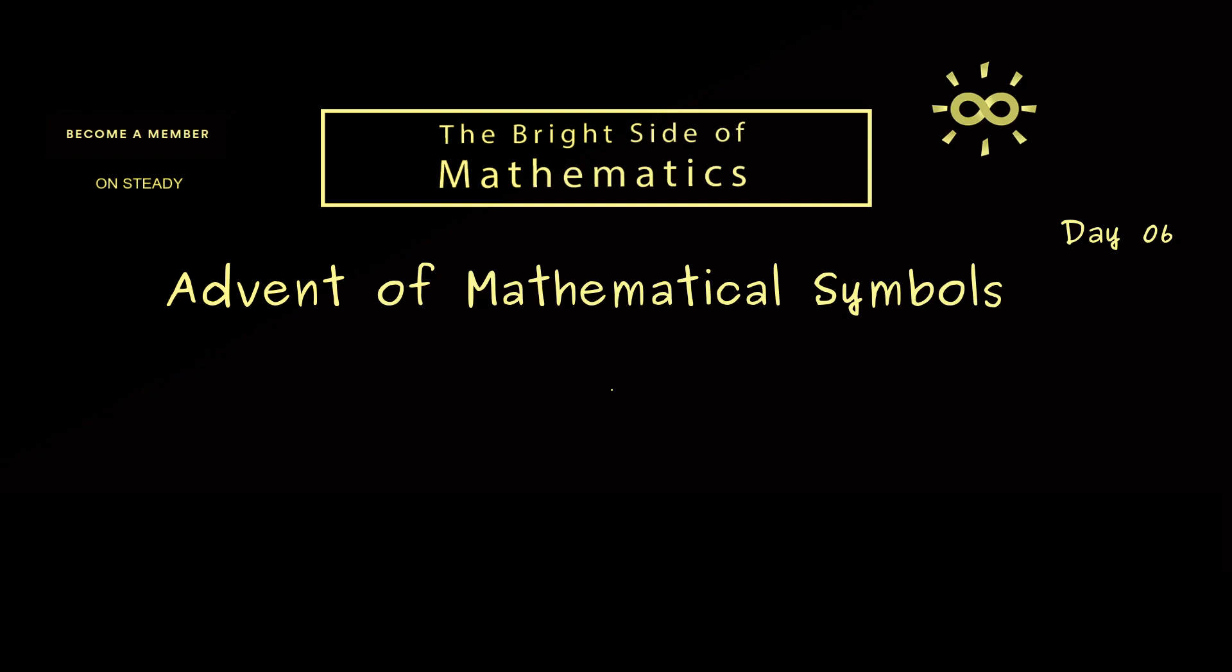The mathematical symbol of today is this small circle we use for the composition of maps or functions. It's a binary operation where we have one map f on the right hand side and another map g on the left hand side.